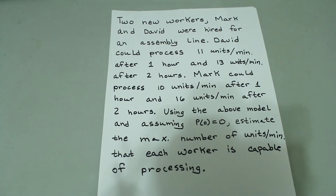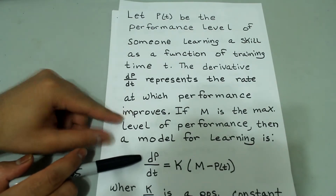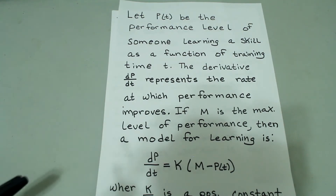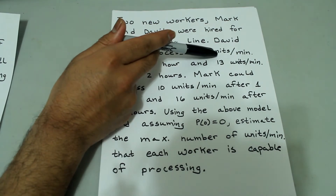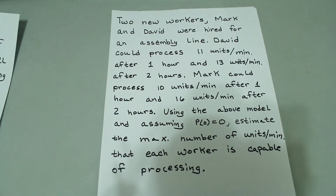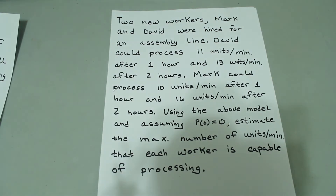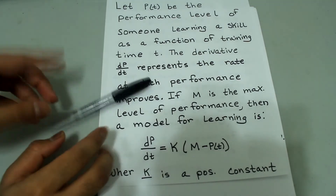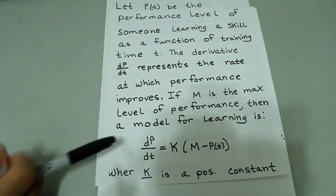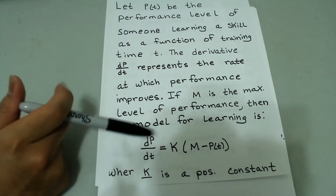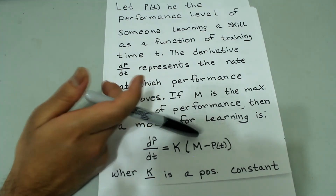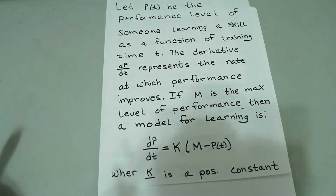In case you have the same numbers and you're on your last attempt, I'll write the answer for David at the end. One important thing to note is that dp/dt represents the rate at which performance level improves, not the rate at which employees process units. So don't get confused and think that dp/dt represents something like 11 units per minute. Also notice that m is a constant — it's just the maximum level of performance. k is also a constant. p, however, is a function of time. So right away we can see this is going to be a separable differential equation.